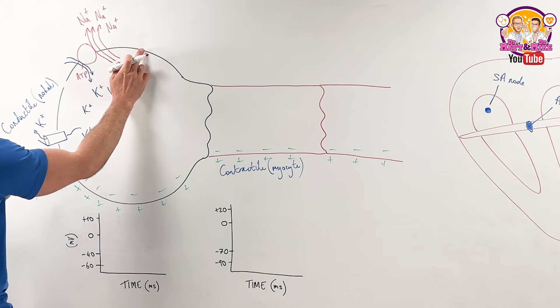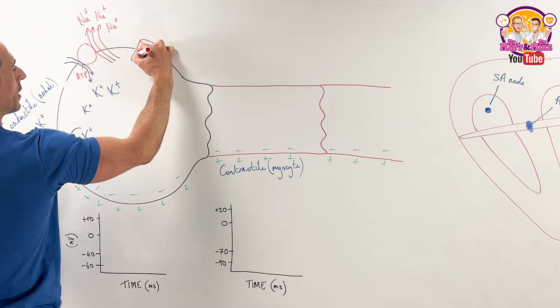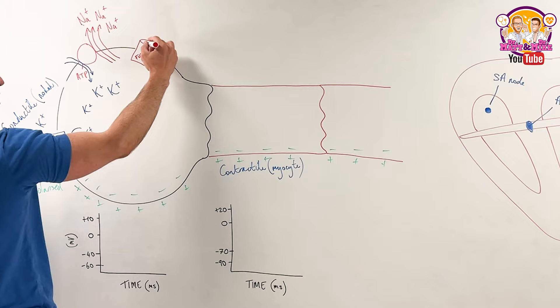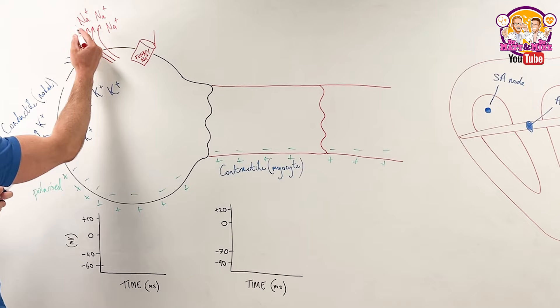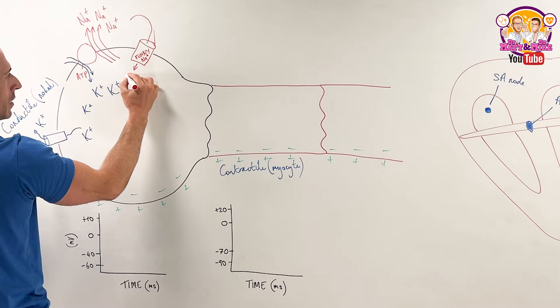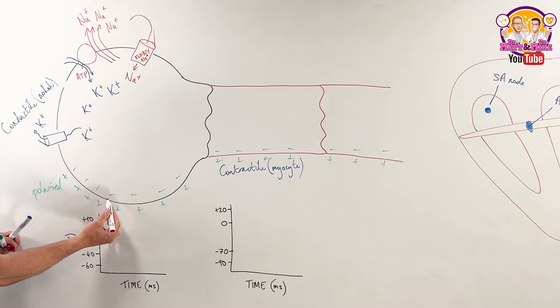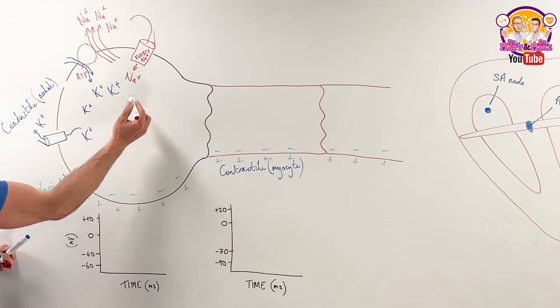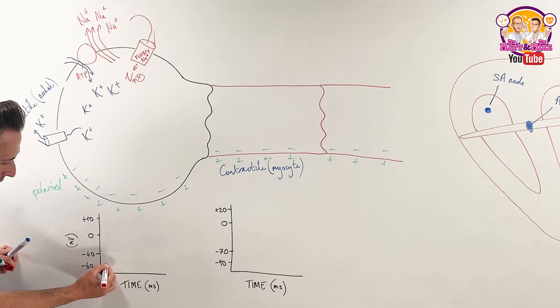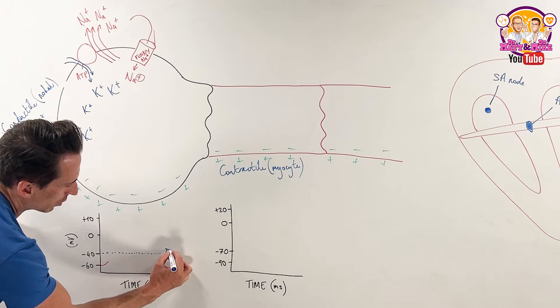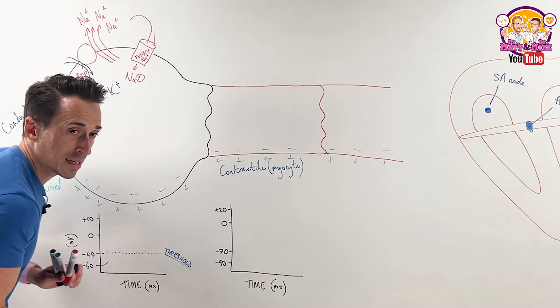They've got a channel called a funny sodium channel. Similar to the leaky potassium channel, its lid is open a little bit. Because most of the sodium is outside, that sodium is going to leak in. So sodium is slowly leaking in, which means at all times these conductile cells are drifting into the positive - bringing positive charge in. We start low at negative 60 because the inside is negative compared to the outside, but as we bring positive sodium in, it slowly brings it up towards positive. Negative 40 is what we term the threshold.